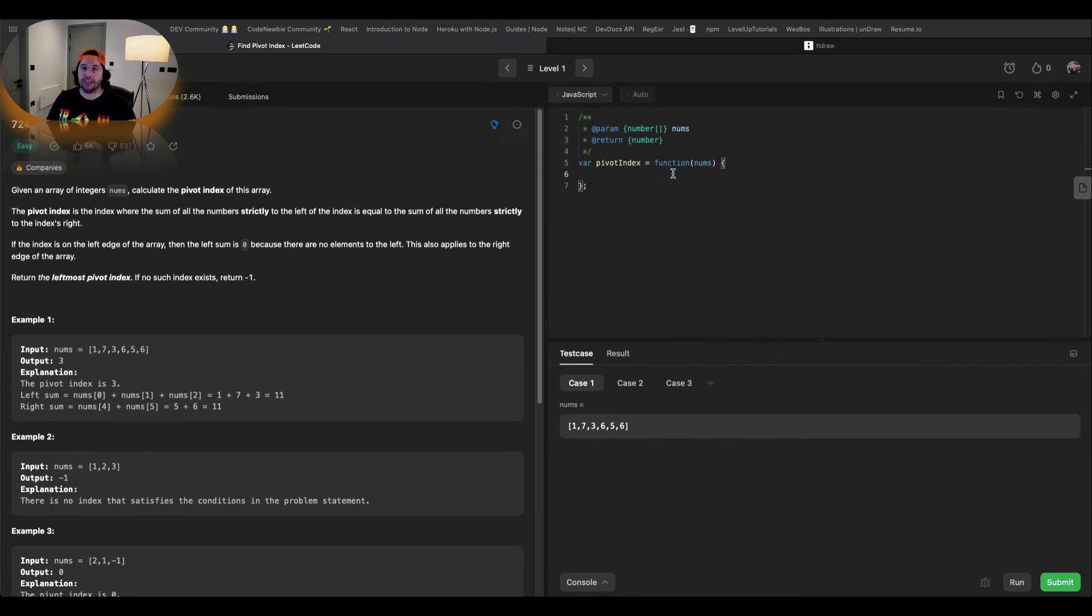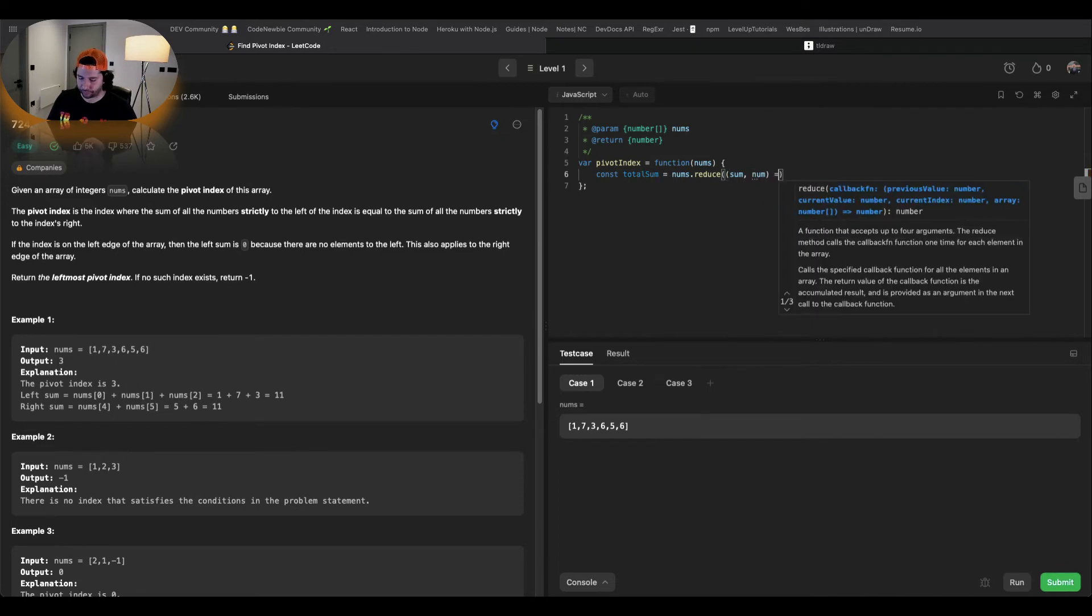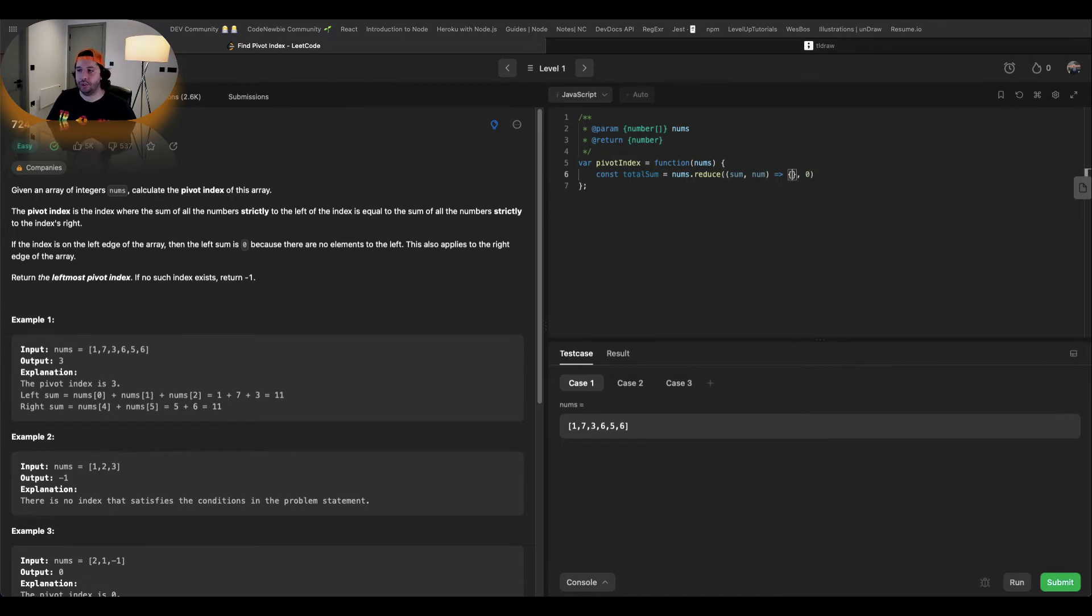So firstly as I said we need to create our total sum. And in order to do that I'm going to use a reduce method. So we've got nums.reduce. We need our accumulator which is going to be a sum, our number. And I'm going to initialize the accumulator to 0. And in order to calculate the sum, we need to do that thing. And of course because we have a reduce method we need to return the sum. Sweet.